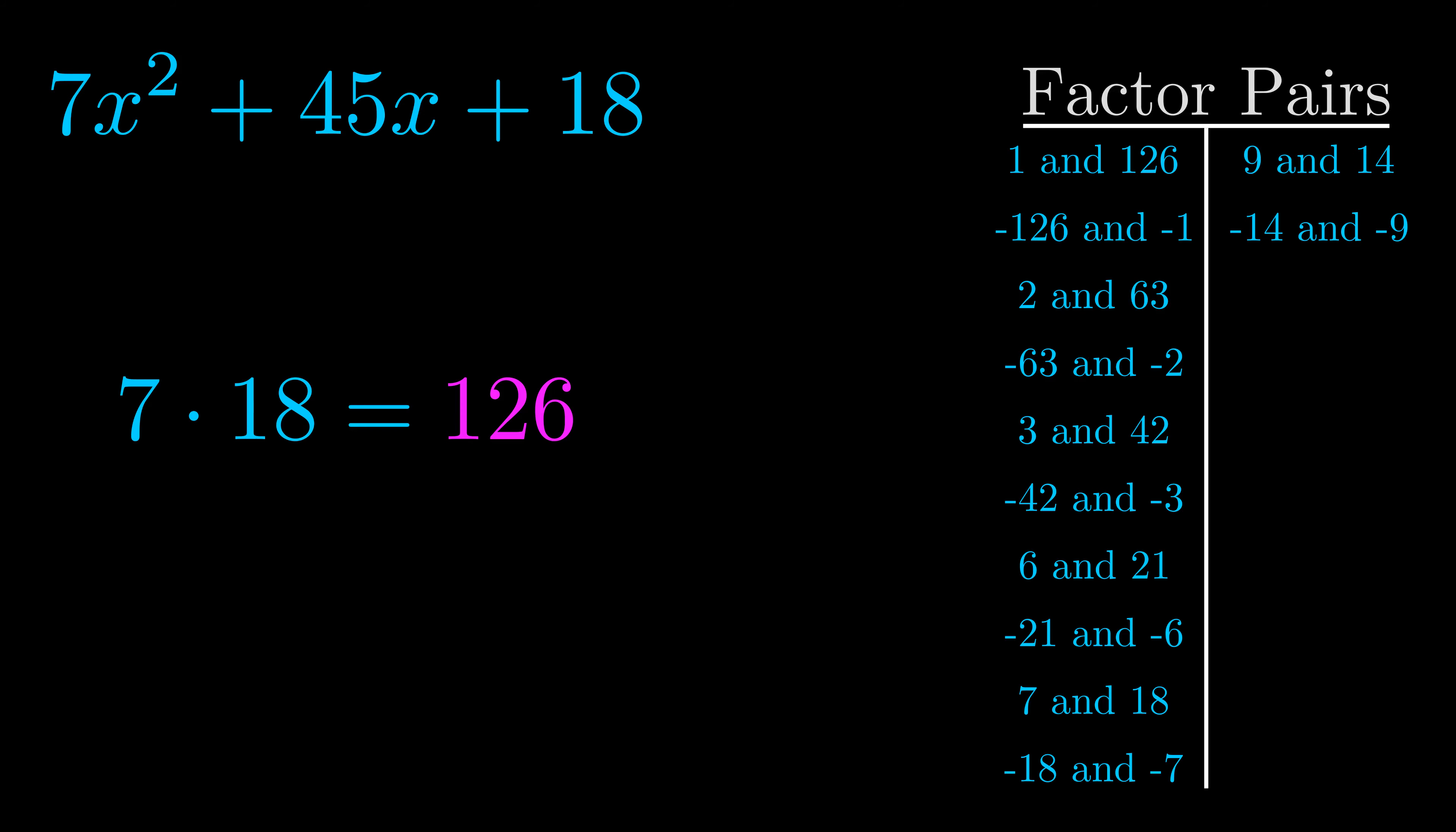The b value is the coefficient on the x term. That's the middle term, the one that we haven't done anything with yet. And really this is the only factor pair that we need.